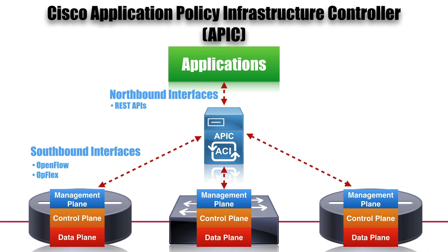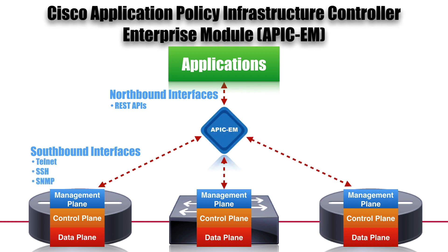The APIC is typically seen in data centers. The APIC-EM — the APIC Enterprise Module — is typically seen more in a campus LAN, a remote office, or a router going out to the WAN. One of the cool things about the APIC-EM is it can interact with traditional devices. Here in my studio, I've got four 2900 series routers that don't speak OpenFlow or Cisco OpFlex — a protocol Cisco created, supported by the APIC. But these traditional devices, Cisco Catalyst switches and ISR routers, don't speak those SDN languages. The APIC-EM can communicate with them using Telnet, Secure Shell, or SNMP — traditional ways of communicating on the management plane.